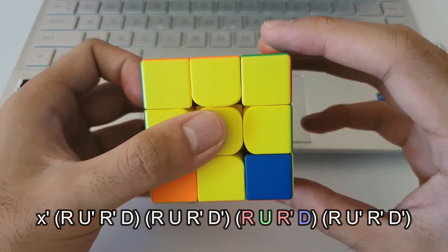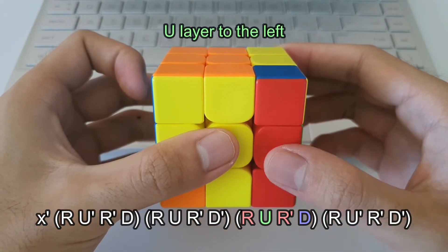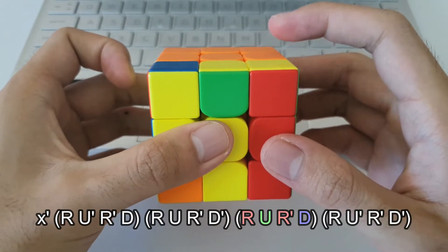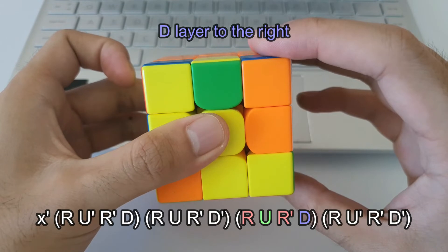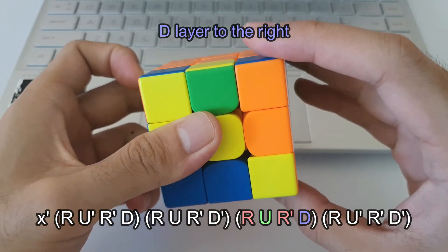So once again, you got R followed by U, so this means that the top layer is going towards the left this time around. R prime D means that the bottom layer is going towards the right, so they're going in different directions this time.